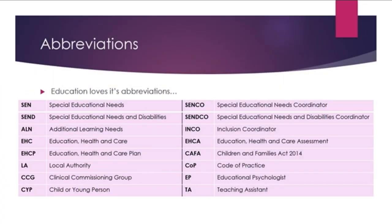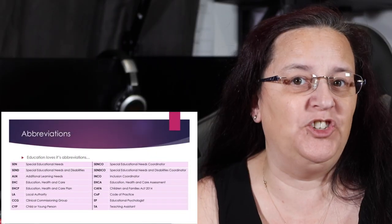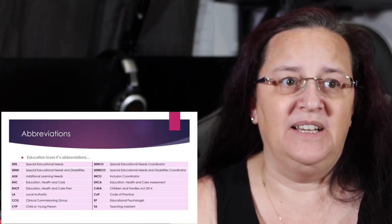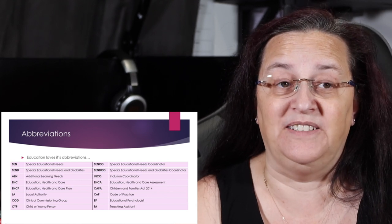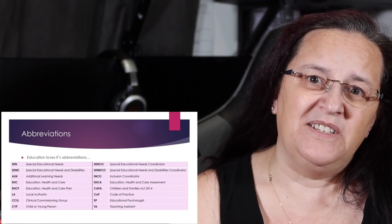The first slide is about abbreviations. As SENCOs, we have a degree in being able to interpret these things, but for parents they very often don't know what they stand for. As a SENCO working with a parent, it's our job to make them feel comfortable, and sometimes you're going to have to explain these numerous times so they understand. The first thing we need to do with parents is actually explain to them what an EHC assessment is.